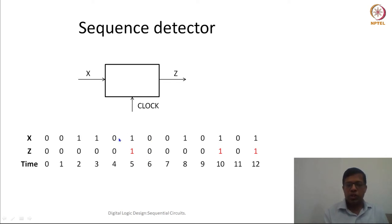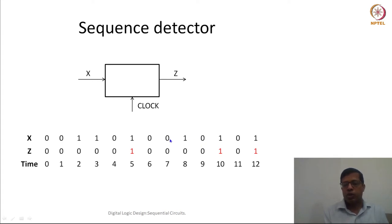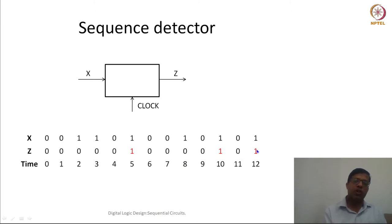Then another input 0 arrives; the previous three bits are 0, 1, 0 — output is 0. Next input 0: bits are 1, 0, 0 — not matching, output is 0. Then 1 comes: bits are 0, 0, 1 — output is 0. Then with bits 0, 1, 0 — output is 0. Then with bits 1, 0, 1 — output is 1. The output is 1 whenever the pattern has matched. So in the same cycle, as soon as the pattern matches, the output remains 1 during that clock period.